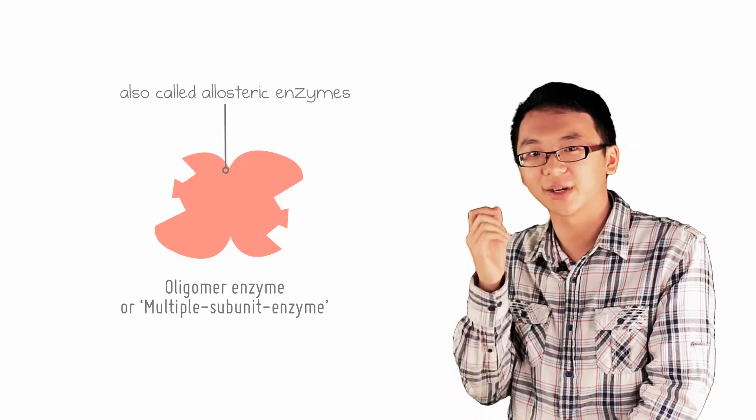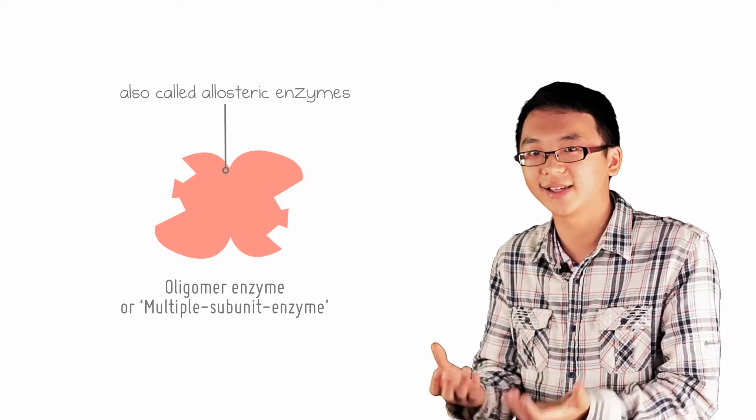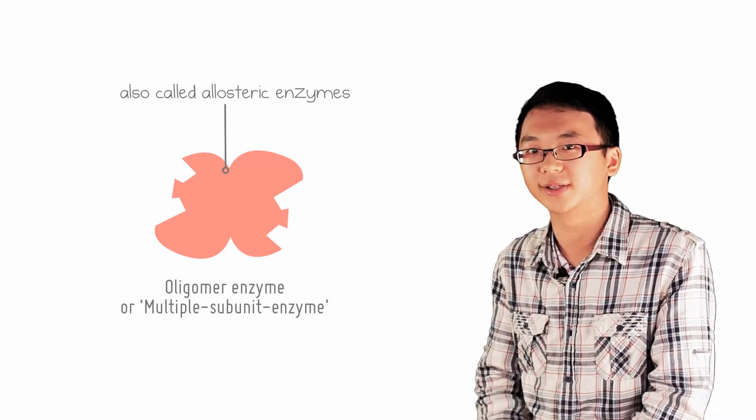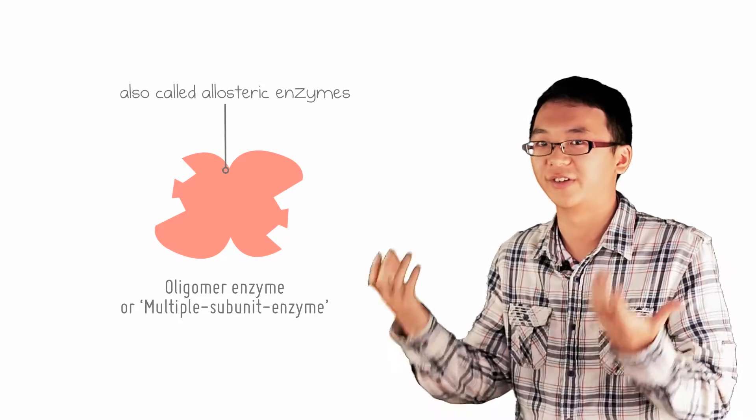So when you see the term allosteric enzymes, it is likely that it refers to an enzyme of multiple subunits because people love to stick to old definitions.